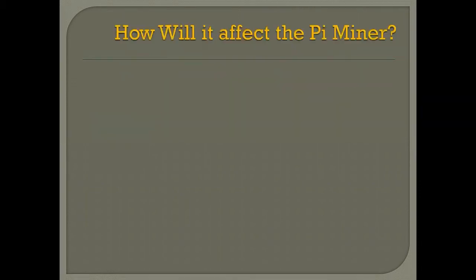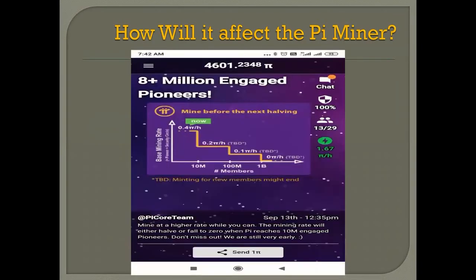This concept of halving is also present in the Pi Network. However, it is somewhat different from Bitcoin. When we open the Pi Network app, we will see this screen. In the screen, it is written that more than 8 million pioneers are engaged in mining Pi. As more people join, this number will increase to 10 million. Once it reaches 10 million, there will be a halving in the Pi Network. And how will it affect the Pi miner? Let us see.